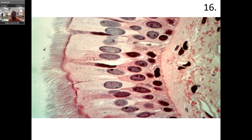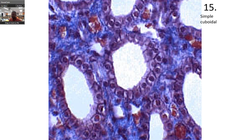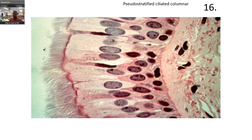What is this? Notice the cilia. Notice this is one layer — it looks like several layers, but it's one layer. So that would make this pseudostratified ciliated columnar epithelium, PCCE.